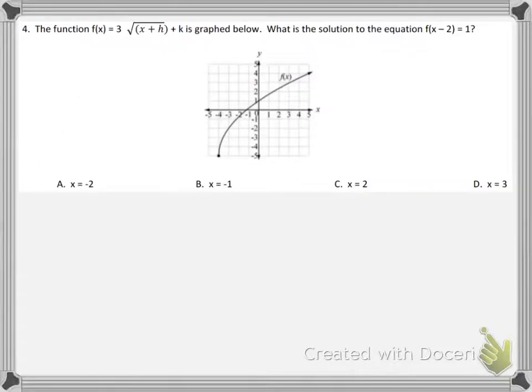Number 4, kind of a tricky question. The function F of x equals 3 times the square root of x plus h plus k is graphed below. What is the solution to the equation F of x minus 2 equals 1? I'm going to show you the backdoor way to understand this problem, so just listen very carefully.